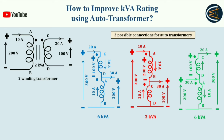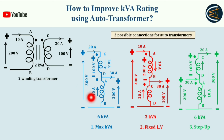These are the different possible connections, and for all of them one thing is common: a higher KVA value. So the KVA rating is improved — that is the title of this video, how to improve the KVA rating. The results are: 6 KVA, 3 KVA, and 6 KVA — all higher than the original 2 KVA. If you want the maximum KVA, you use option one, which gives 6 KVA — the maximum among all three.